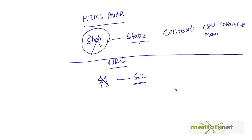Another important thing: when there are hidden variables or session variables, in HTML mode VUgen understands the steps and takes appropriate action so those things will not fail. In URL mode, since we are just sending requests without understanding the context, dynamic values may cause failures.